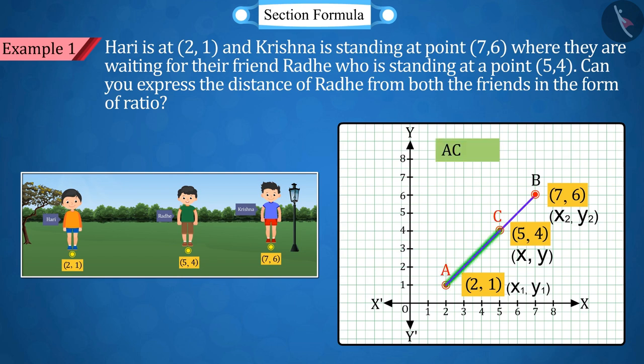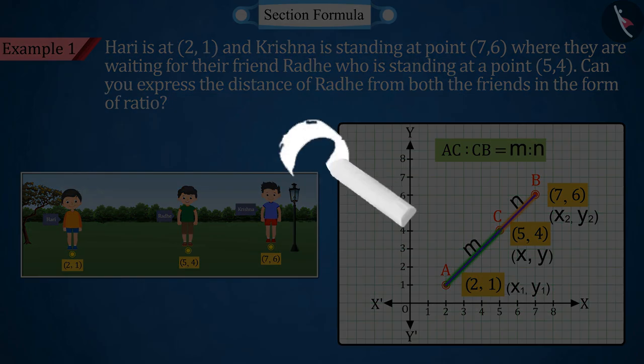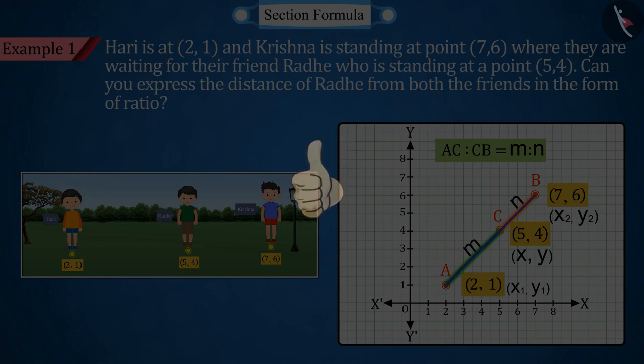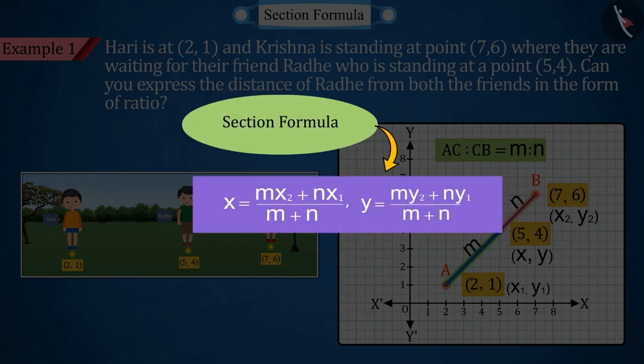We have to find the value of AC:CB ratio. Suppose here the ratio of AC and CB is m:n. Can you tell us what we need to do for this? Well done, it is correct that section formula will be used here.